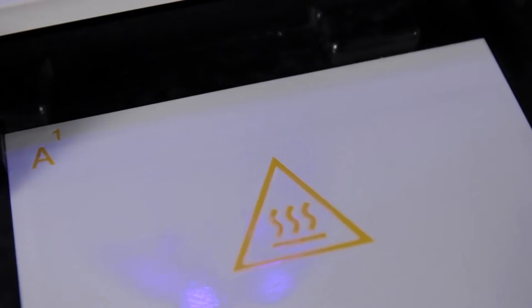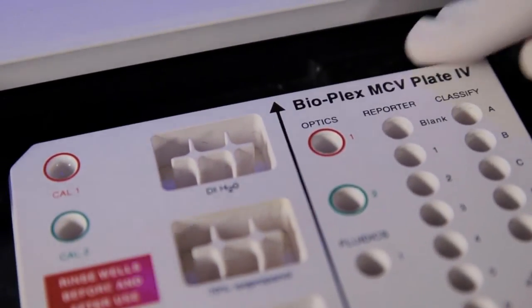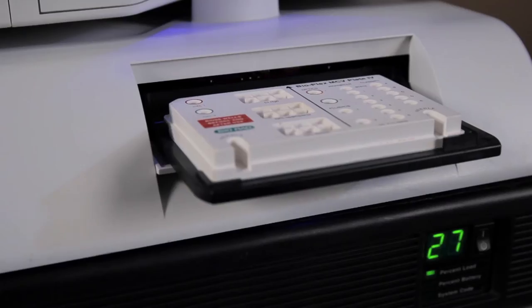Now, place the MCV plate on the XY platform with the black arrow on the MCV plate facing towards the array reader and click Eject Retract to retract the plate.